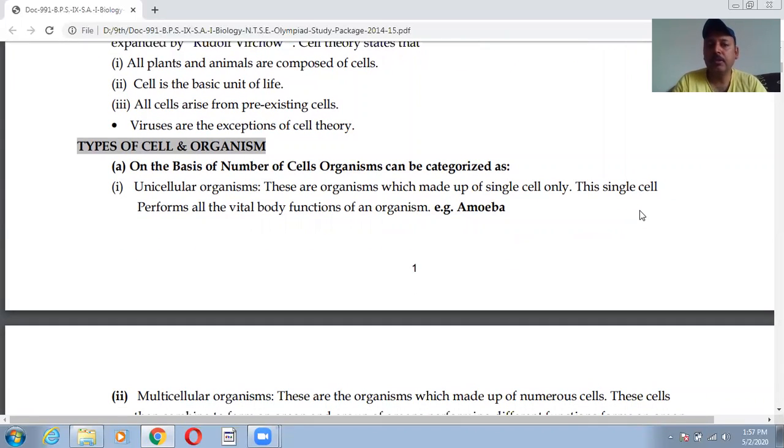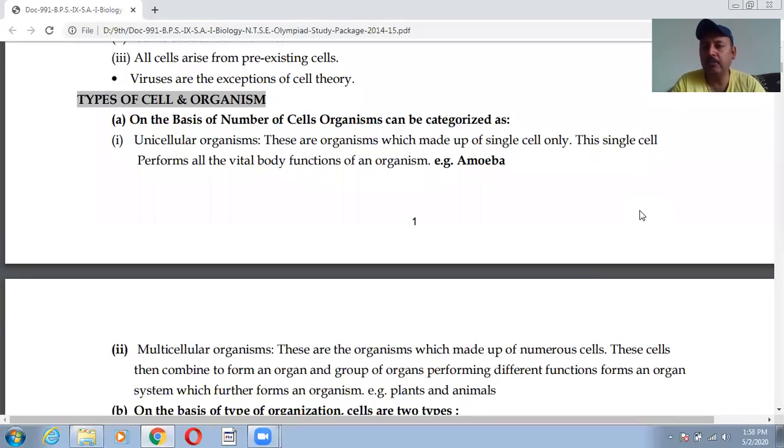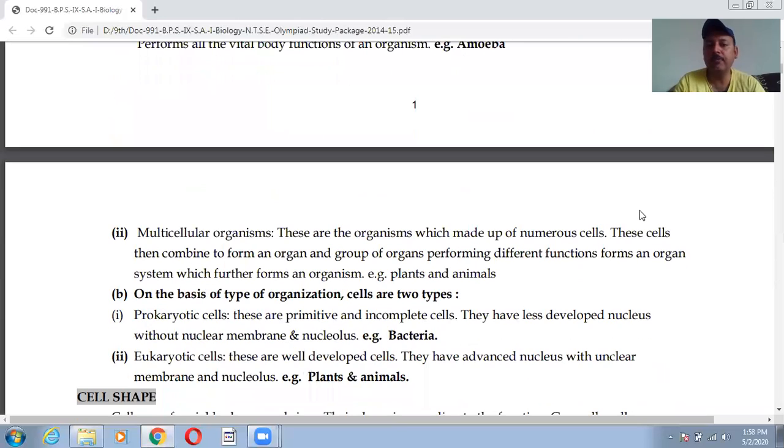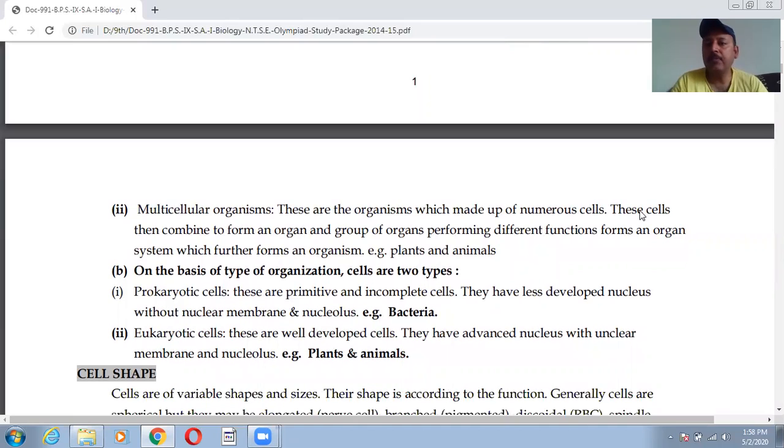Types of cell and organisms on the basis of number. We know that on the basis of number we can divide the cells into two categories: unicellular as well as multicellular. Unicellular means the organism which are made up of single cell. In these kind of organism the single cell performs all the vital body functions of an organism. Whereas in multicellular we are having number of cells, made up of numerous cells. These cells combine to form an organ and group of organs performing different functions forms an organ system.